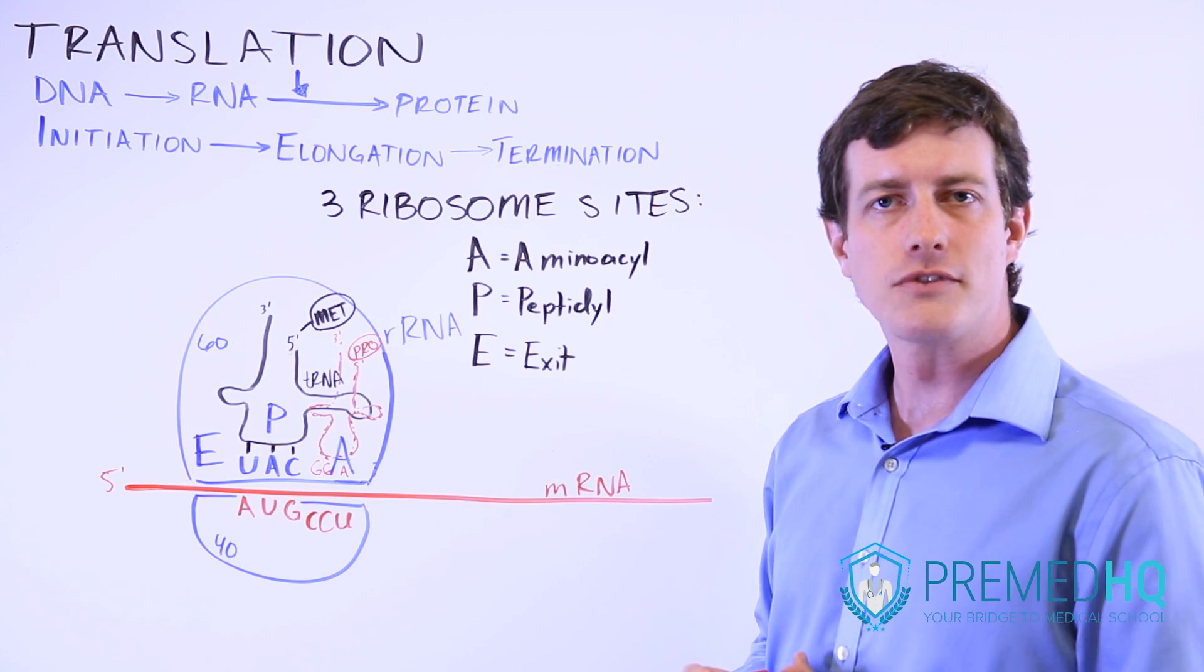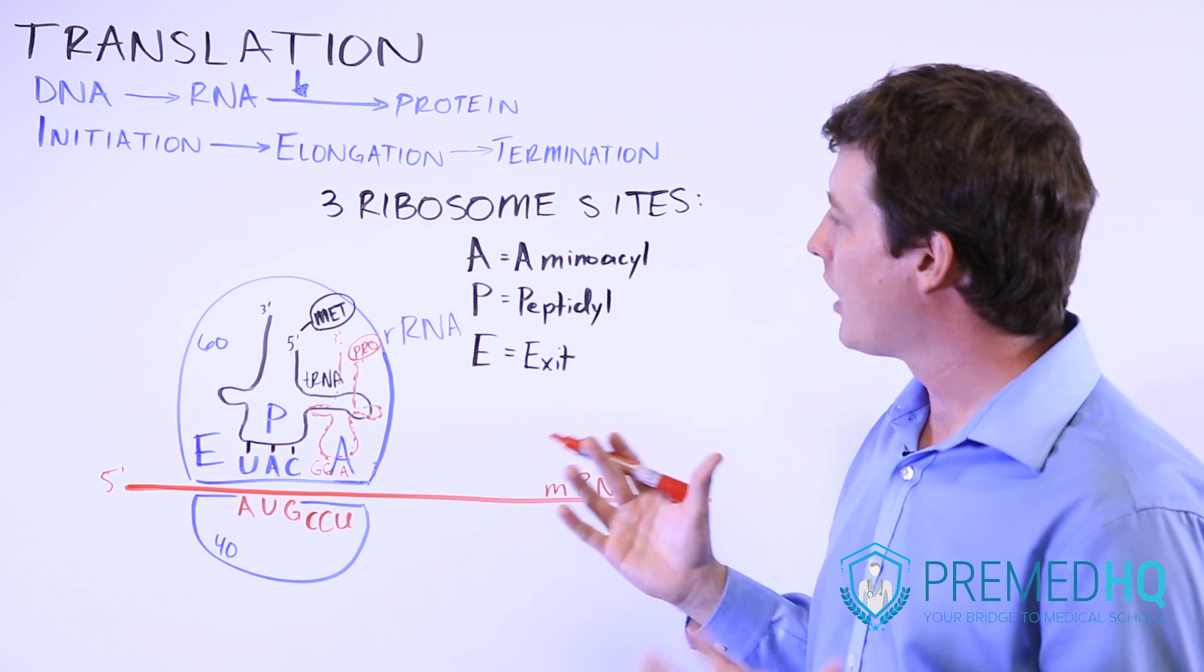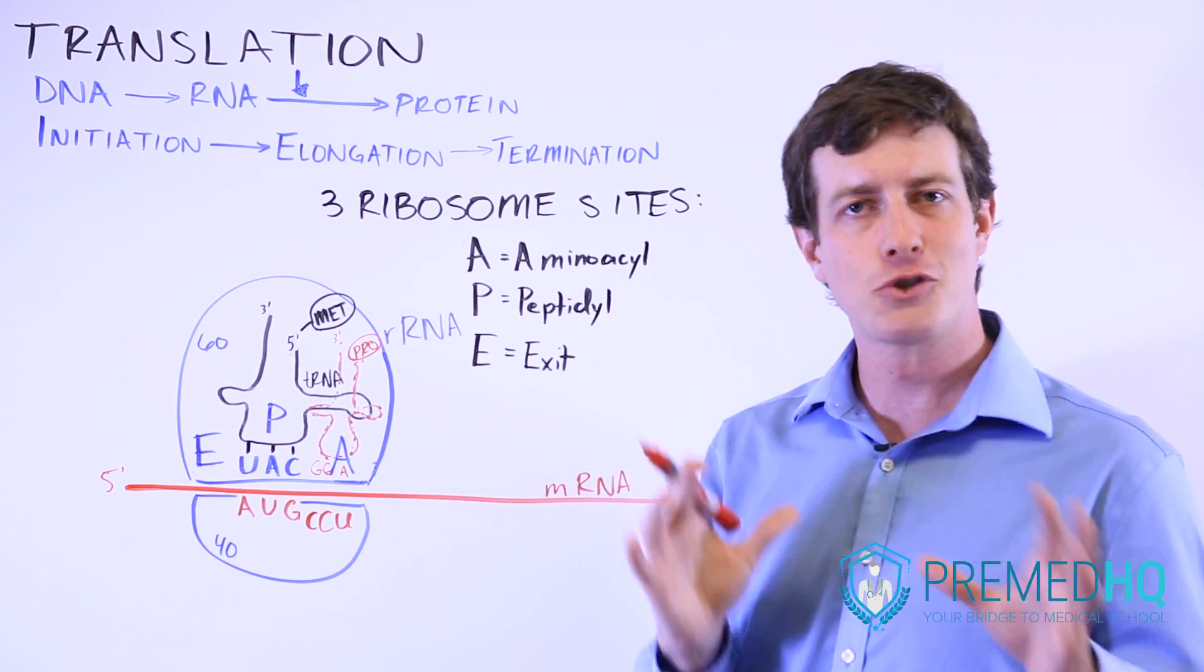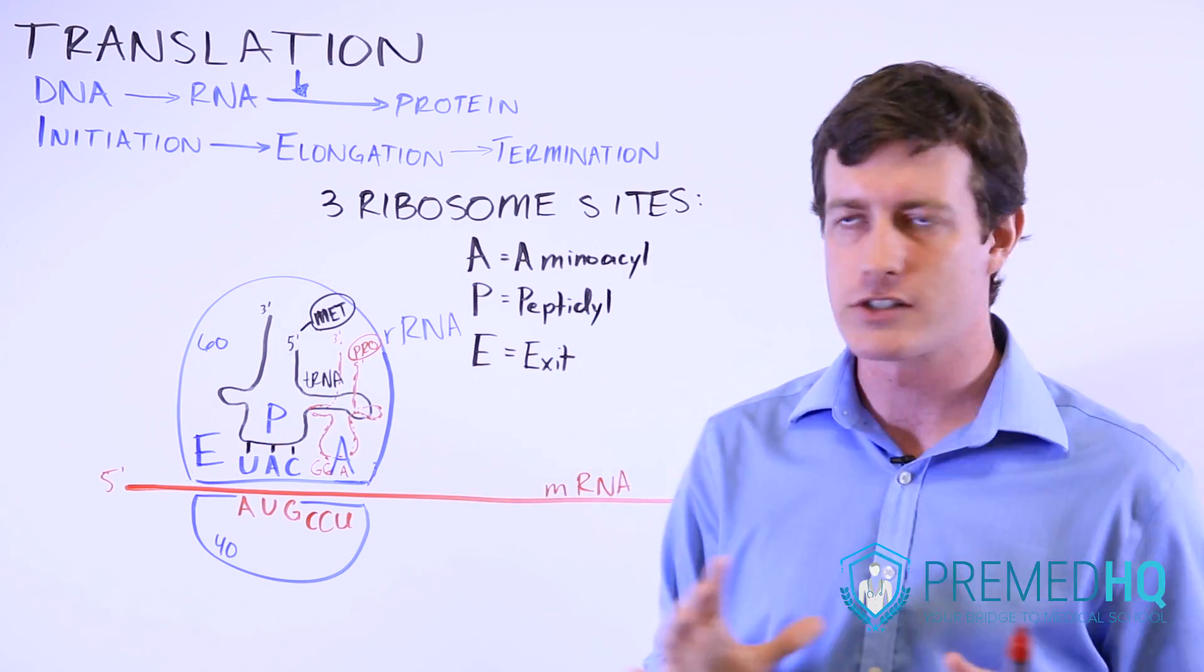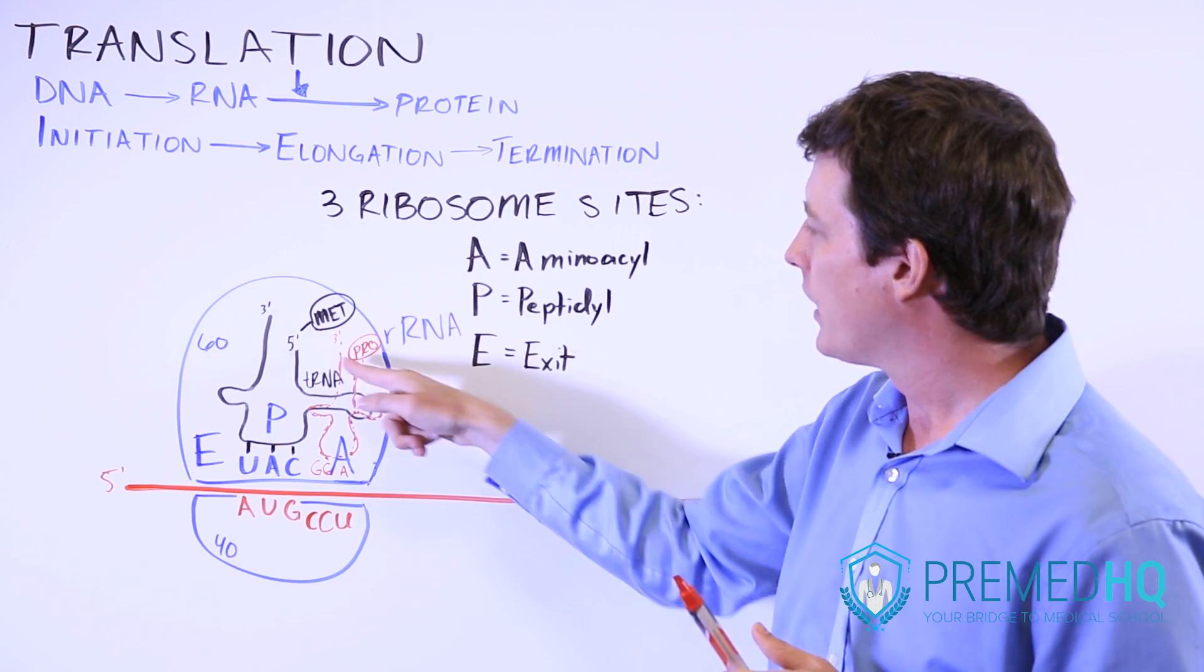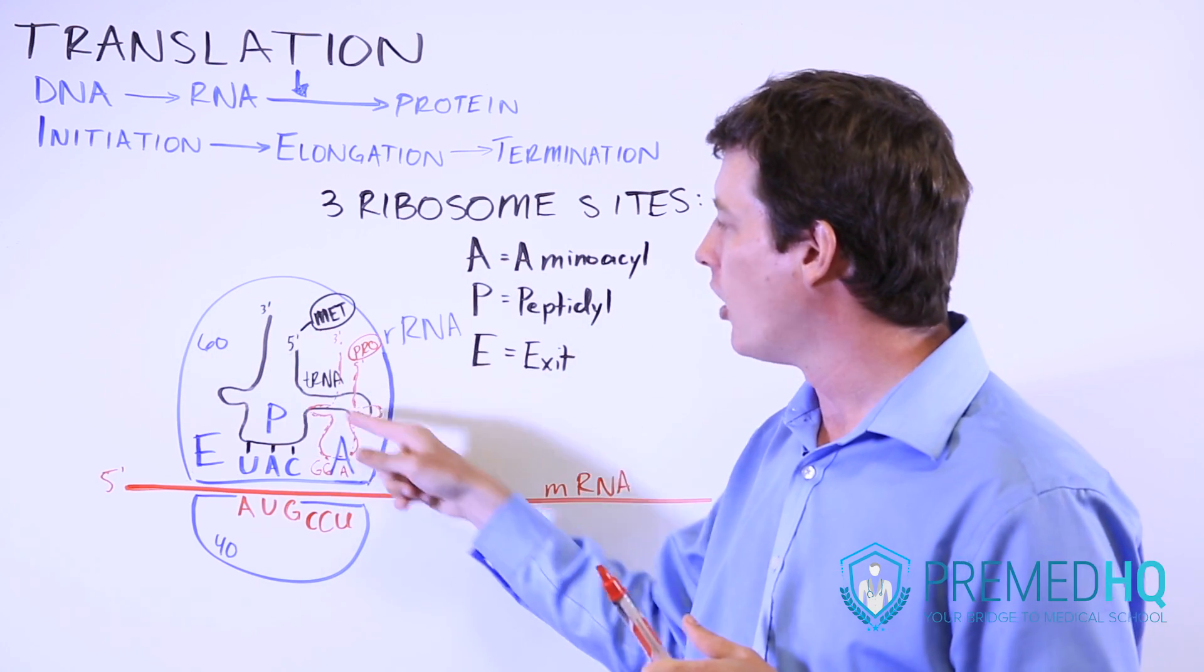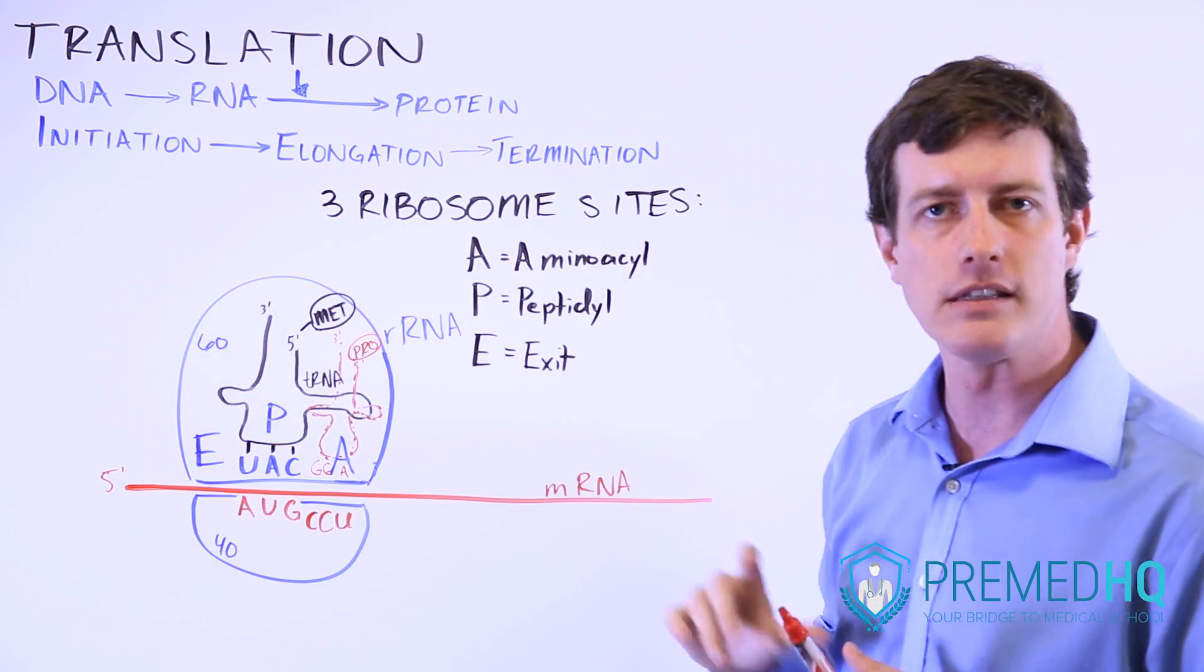Elongation involves the catalytic function of the ribosome. The ribosome is essentially what they call a peptidyl transferase, and what that means is it transfers a peptide and basically allows us to add the already existing chain of amino acids to a growing peptide by moving these tRNAs from one site to the next in order to facilitate this process.